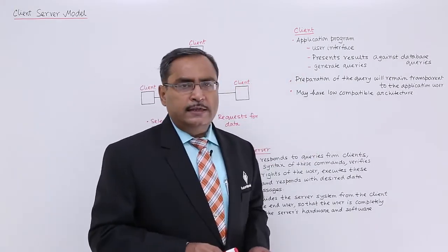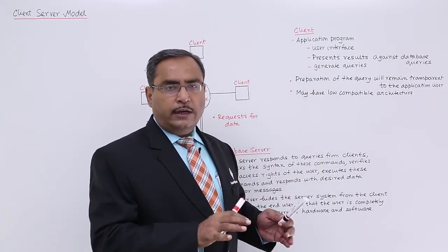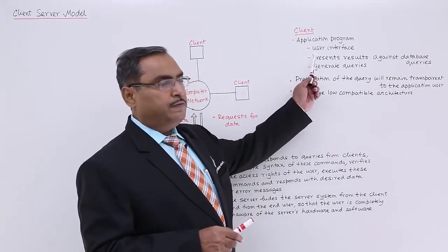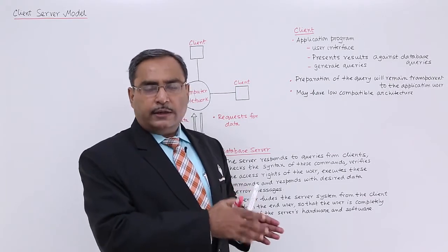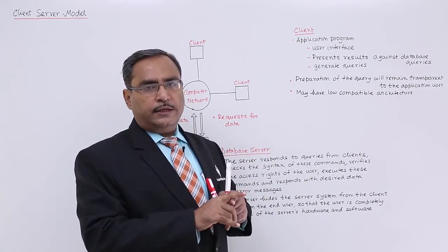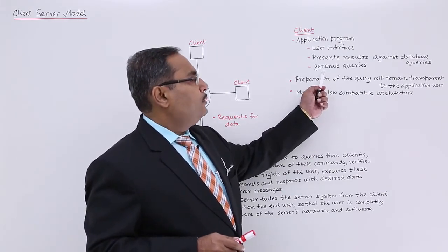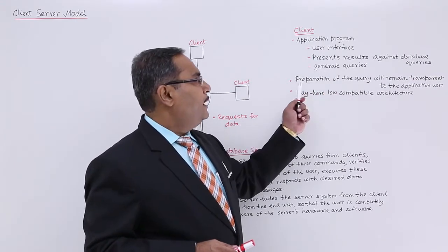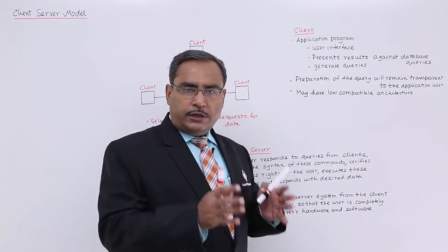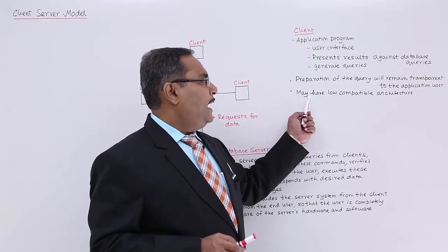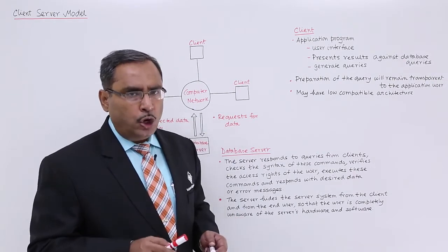Regarding client features: the client has an application program with an easy user interface, typically a GUI interface. The program presents results against database queries — the query is processed at the server end and the result is made available to the client, which displays it in a smart way. The application program also generates the queries, and the preparation of queries remains transparent to the application program users. The client may have a low-end architecture since processing is not done at the client end.